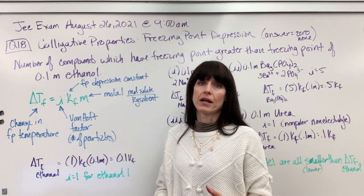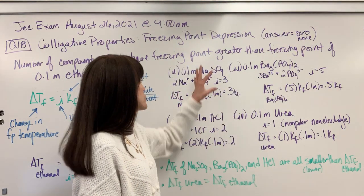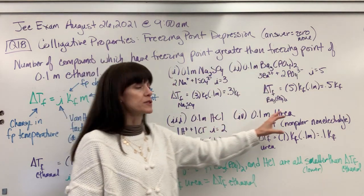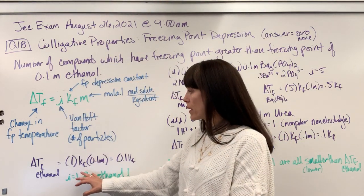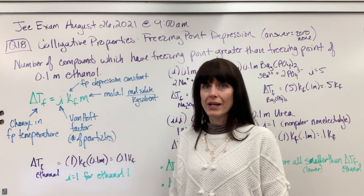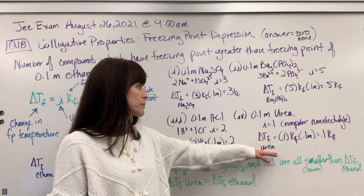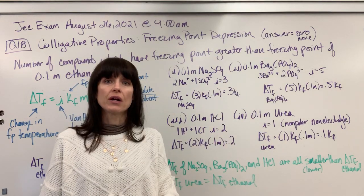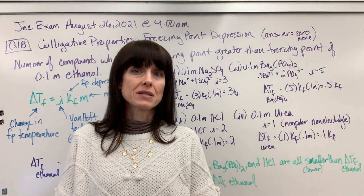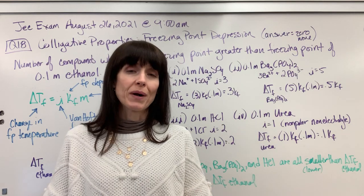You could quickly look and count particles. Three particles, five particles, two particles, one particle. This has one particle. None of these are going to have a greater freezing point. Urea will be the same because it has the same number of particles. And the other three are all going to be lower, smaller, because they have more particles.